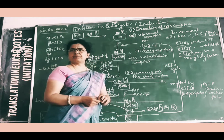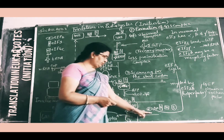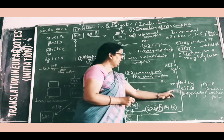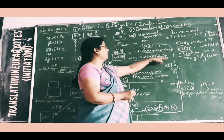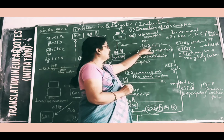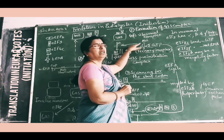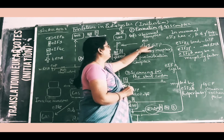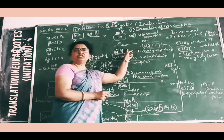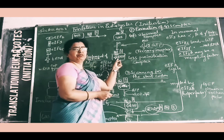GEF is a guanine nucleotide exchange factor. This factor drives the cycling of EIF2. After all initiation factors are released, EIF2-GDP is recycled. EIF2B helps in the exchange of GDP for GTP, forming EIF2-GTP. This EIF2-GTP then helps in the attachment of the initiator transfer RNA. EIF2 associated with GTP is involved in the delivery of the charged initiator transfer RNA to the 40S subunit.